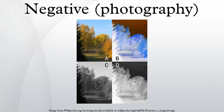A positive image is a normal image. A negative image is a total inversion, in which light areas appear dark and vice versa. A negative color image is additionally color reversed, with red areas appearing cyan, greens appearing magenta, and blues appearing yellow. Film negatives usually have less contrast but a wider dynamic range than the final printed positive images. The contrast typically increases when they are printed onto photographic paper.